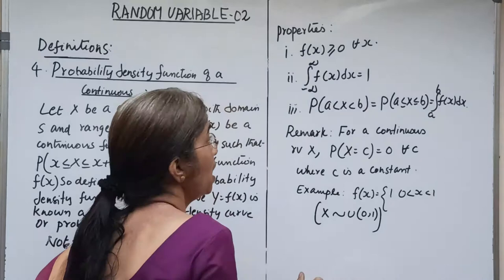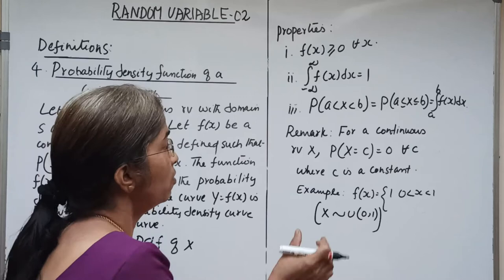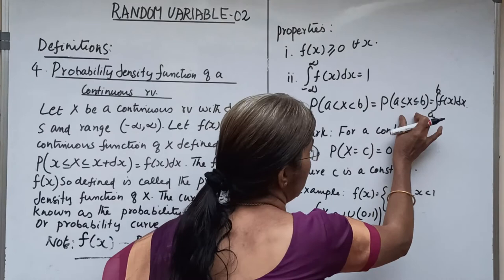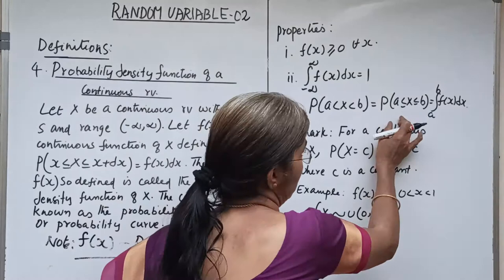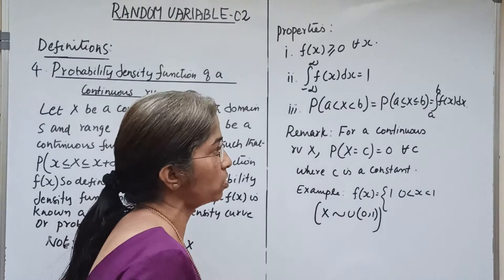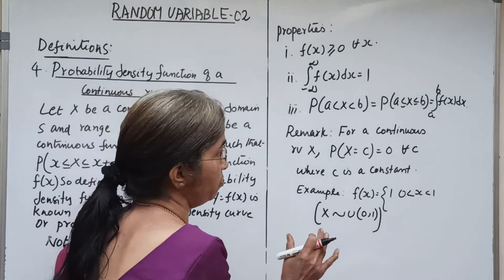In the case of continuous random variables, the probability a less than X less than b — whether it is an open or closed interval — is given by the integral from a to b of f(x) dx. Whether the interval is open or closed, it does not matter. The probability a less than X less than b equals the integral from a to b of f(x) dx.